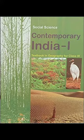These forests are at their best in areas having more than 200 centimetres of rainfall with a short dry season. The trees reach great heights up to 60 metres or even above. Since the region is warm and wet throughout the year, it has a luxuriant vegetation of all kinds — trees, shrubs and creepers — giving it a multi-layered structure. There is no definite time for trees to shed their leaves; as such, these forests appear green all the year round. Some of the commercially important trees of this forest are ebony, mahogany, rosewood, rubber and cinchona.